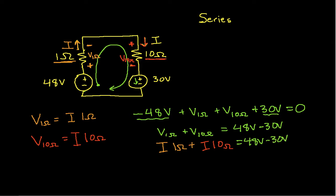Okay, now I have an I here and an I here. I can factor both of those I's out to give me I times 1 ohm plus 10 ohms. And again, this is still equal to 48 minus 30 volts.